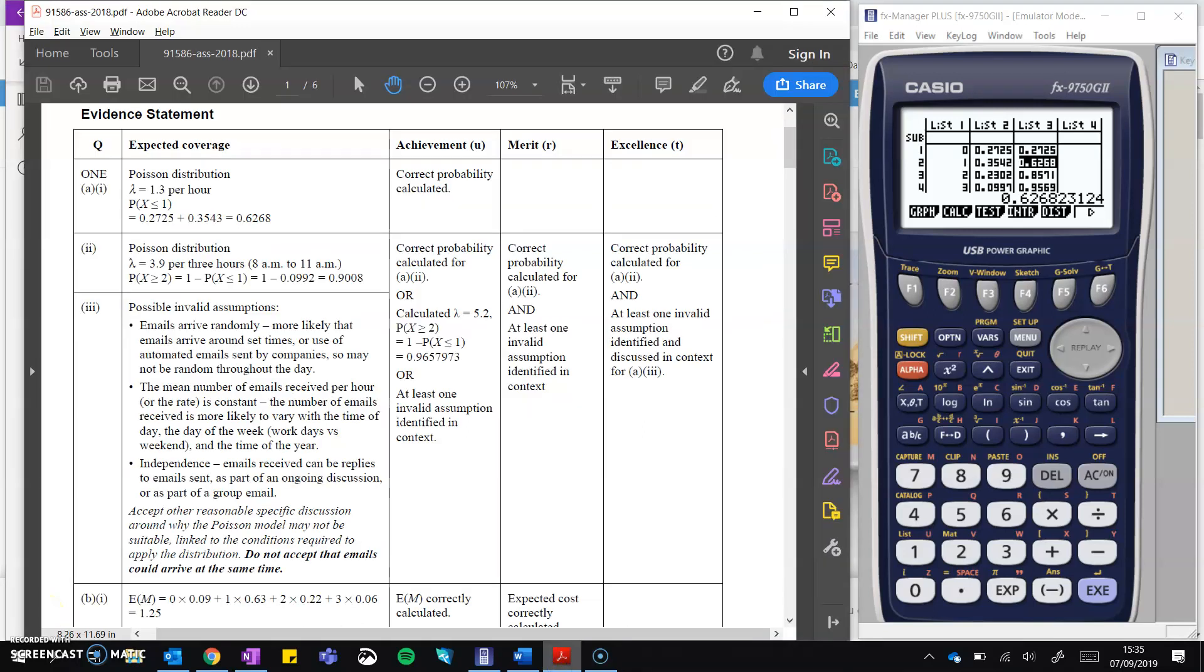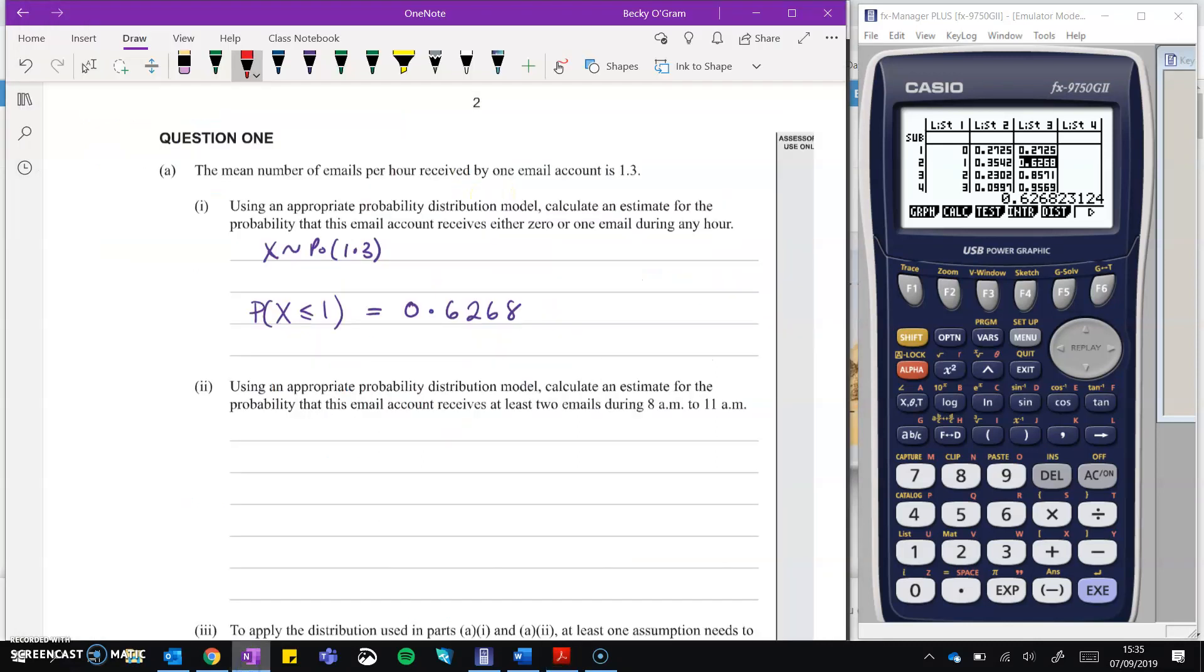We'll do a little check over at the mark scheme. We can see, yes, that was 0.628, and that was worth a U mark.